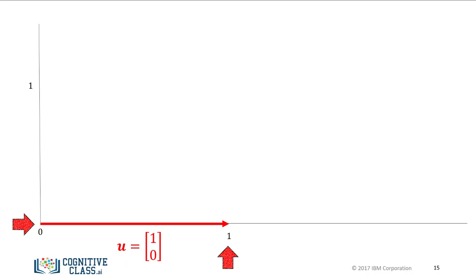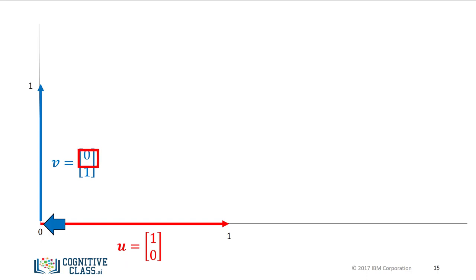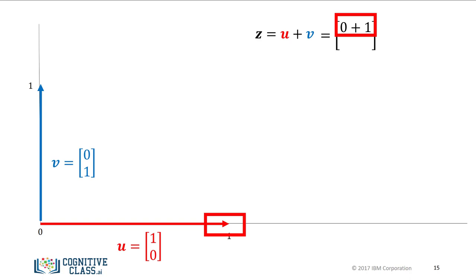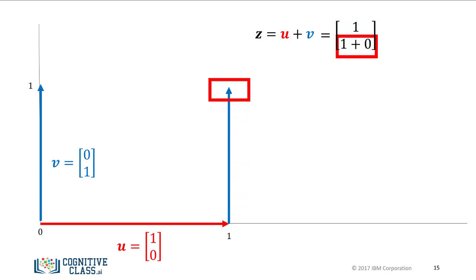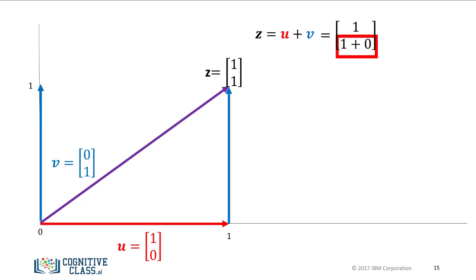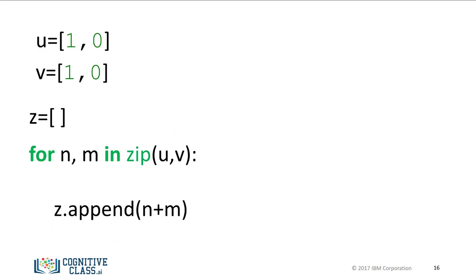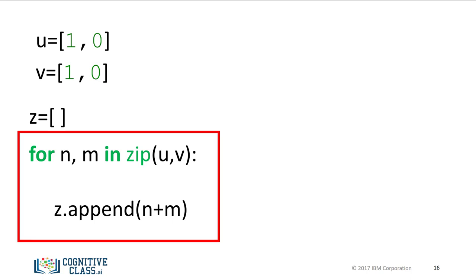The second component is 0, so the vector does not point in the vertical direction. The second vector is represented in blue. Its first component is 0, so the arrow does not point in the horizontal direction. Its second component is 1, so the vector points one unit in the vertical direction. When we add vectors u and v, we get the new vector z. We add the first components, corresponding to the horizontal direction, and the second components. It's helpful to use the tip-to-tail method, placing the tail of vector v on the tip of vector u. The new vector z is constructed by connecting the base of the first vector u with the tail of the second vector v.